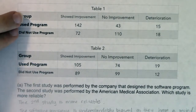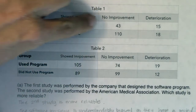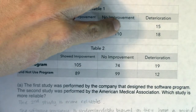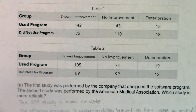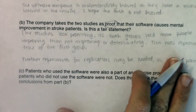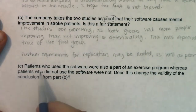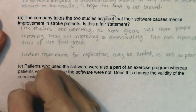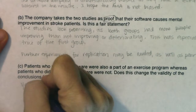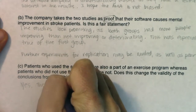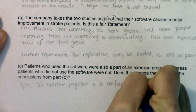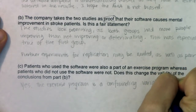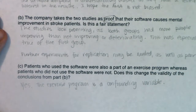A better experimental design would have had both groups either exercise or not exercise, or created subgroups within each group — exercise vs. not exercise — for both those using the program and those not using the program. That would have been a better experimental design, but that wasn't the setup of this problem. So, does this change the validity of the conclusions from Part B? Yes, it does. The exercise program is a confounding variable — was the improvement in problem-solving skills due to the software or the exercise? We just don't know; it's confounded.